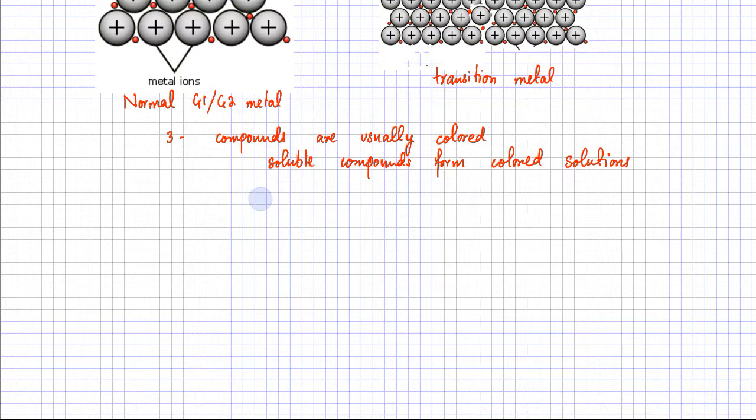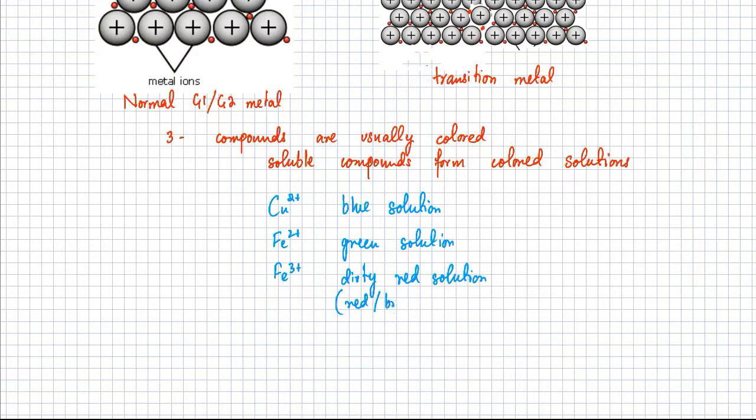So that is specifically for transition metal compounds and some of the compounds and some of the examples that you must remember what the color is. For example, Cu2+ is very often any compound containing Cu2+ that is very likely to have a blue solution. So any solution containing Cu2+ ion is very likely to have a blue solution. Similarly, any solution that has Fe2+ in it, it's going to be a green solution.